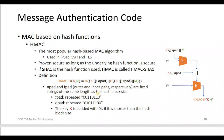The ipad and opad are fixed strings of the same length as the hash block size. When performing the XOR operation, both elements must be the same length, so if the key is shorter than the hash block size, it is padded with zeros.